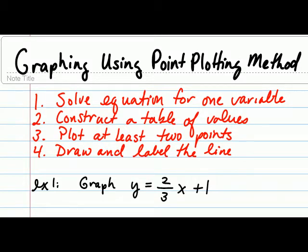To graph using the point plotting method, we will first solve the equation for one variable. Then we'll construct a table of values, which will give us a set of ordered pairs. Then we'll plot at least two points on our coordinate system. Then we'll draw and label the line that passes through those points.